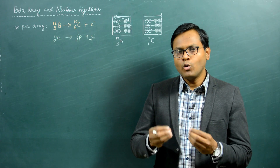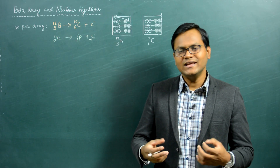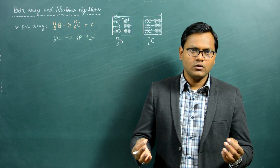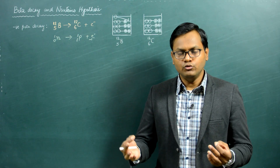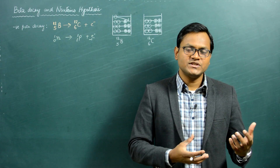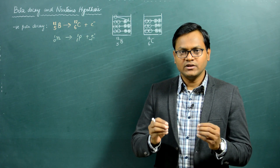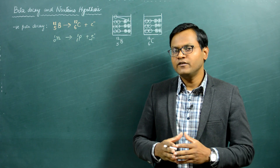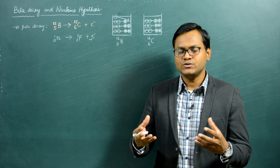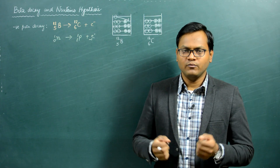Beta decays are spontaneous radioactive decay processes in which, inside a nucleus, either a neutron gets converted to a proton, or a proton gets converted to a neutron, and in that process either an electron is emitted or a positron is emitted respectively. Now why does this kind of reaction happen in the first place? This is because in nature most stable nuclei have a certain balance of number of neutrons and number of protons.